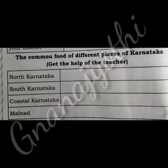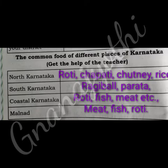Now we learn about the common food of different places of Karnataka. North Karnataka: roti, chapati, chutney, rice. South Karnataka: ragi ball, paratha. Coastal Karnataka: roti, fish, meat, etc. Malnad: meat, fish, roti. Understood, children?